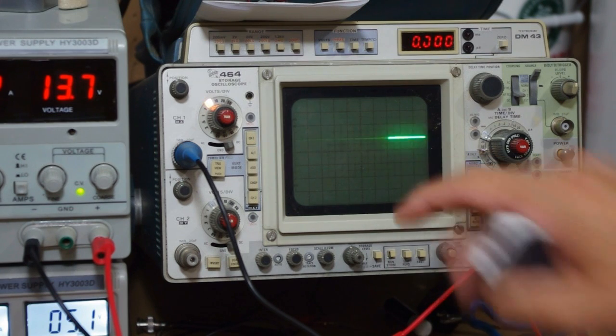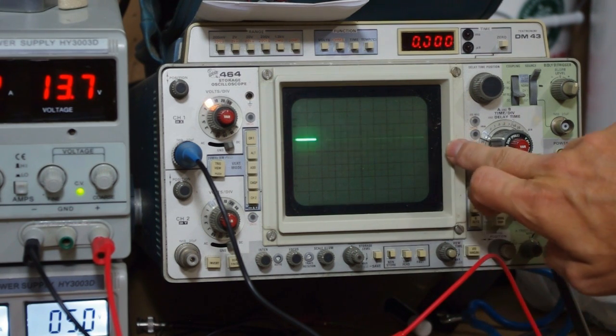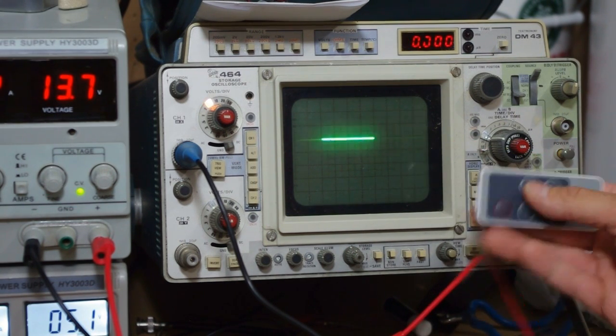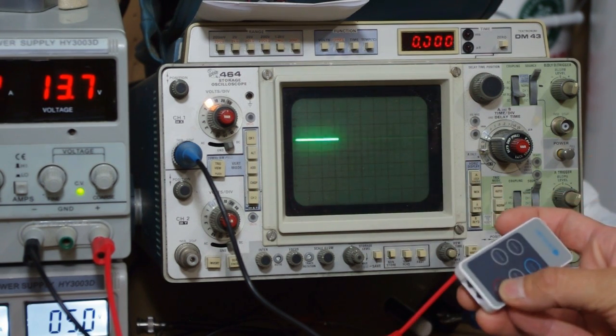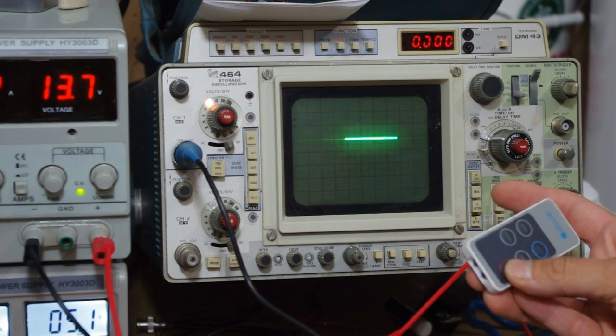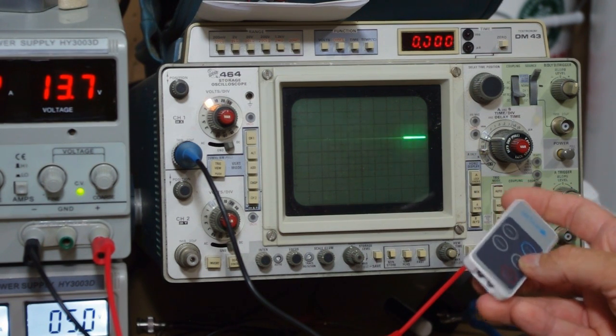This is the output of pin number one on an oscilloscope, and I'm just using a remote control that I had gotten from an air conditioner. As you can see when I press the button, the signal dips down. It goes from high to low on pin one of the demodulator.